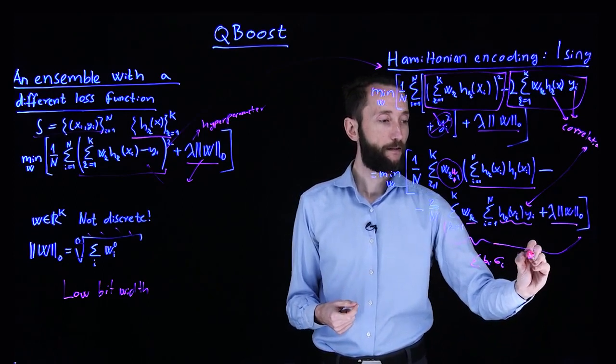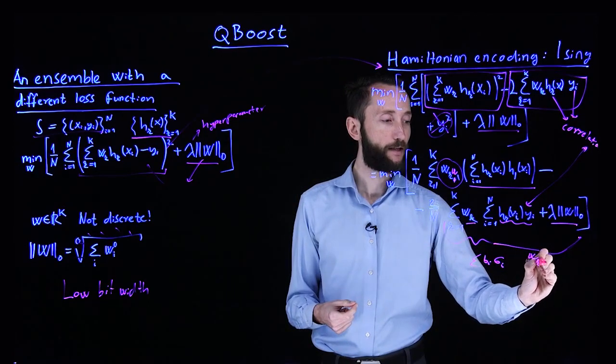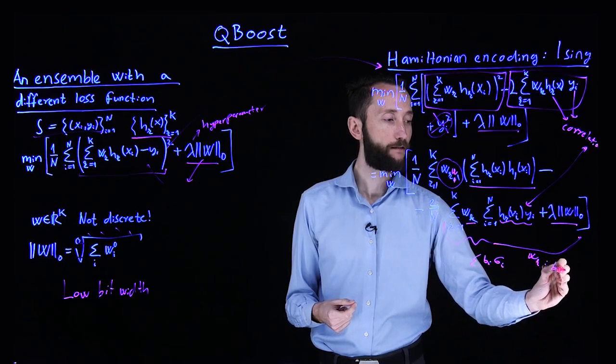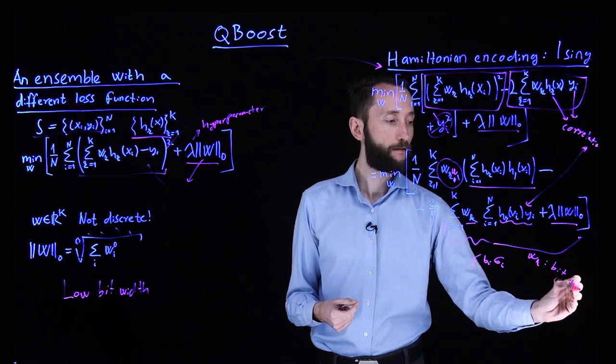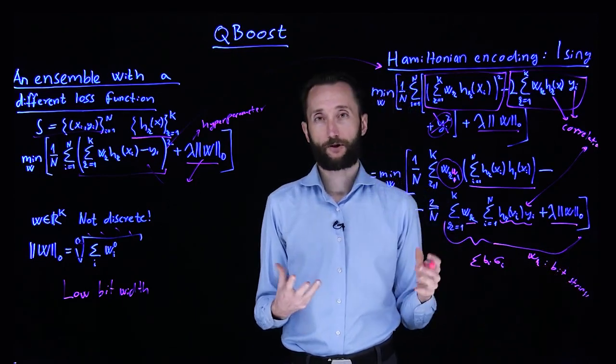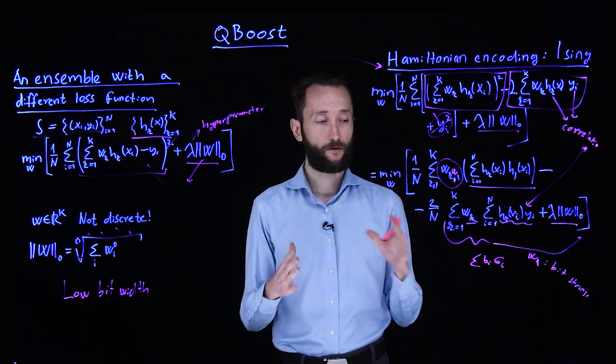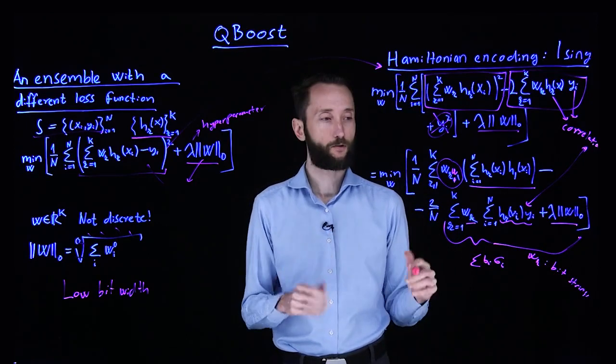Well, the only difference is that the WK entries are described as bit strings, whereas here we have spins which take values plus one, minus one, but that's just a shift that's very easy to transform.